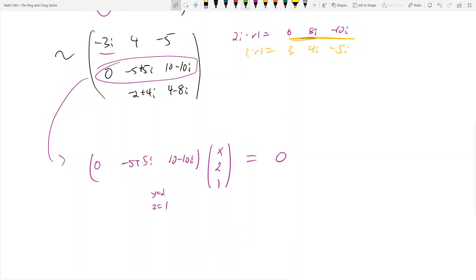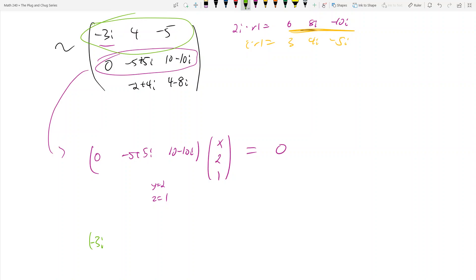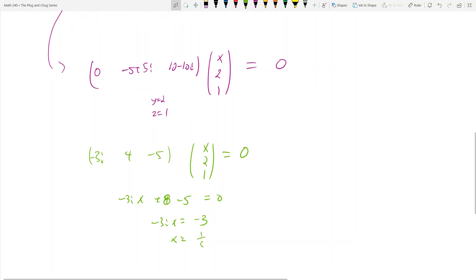Now I have to take the top row and get zero as well. So I need -3i*x + 4*2 - 5*1 equals 0. This gets me -3i*x + 8 - 5 equals 0, which gives -3i*x equals -3, so x equals 1/i. If you rationalize the denominator by multiplying by -i/-i, you'll see that this is just -i/1, which is -i.